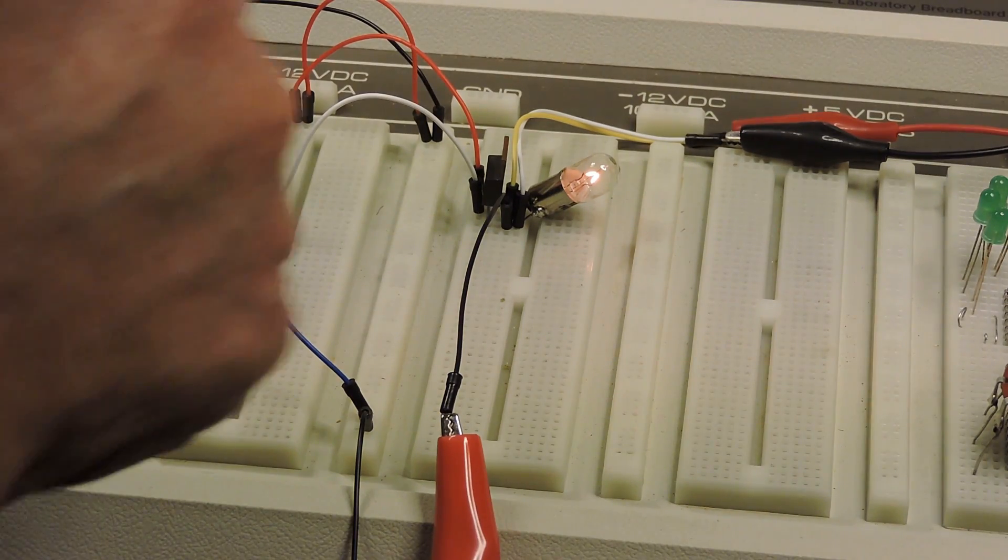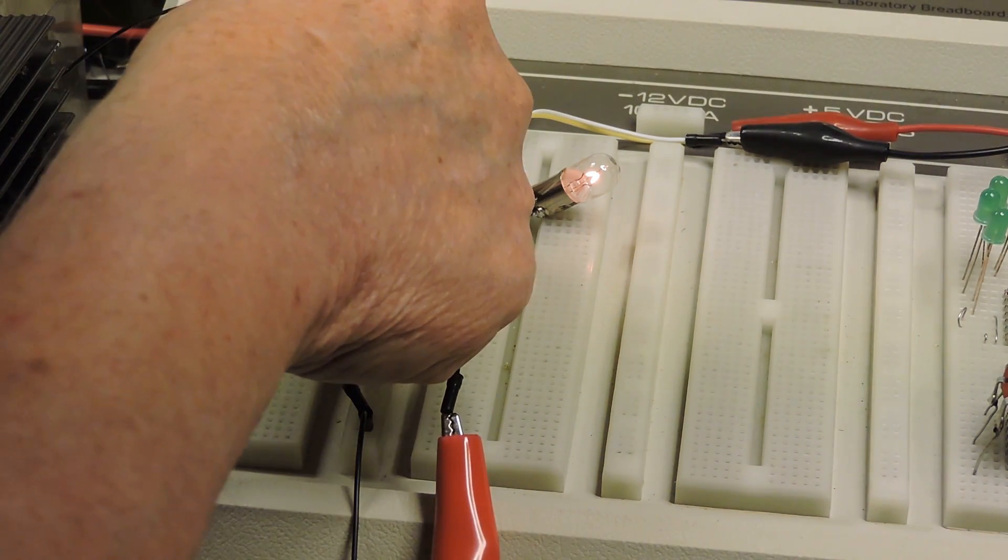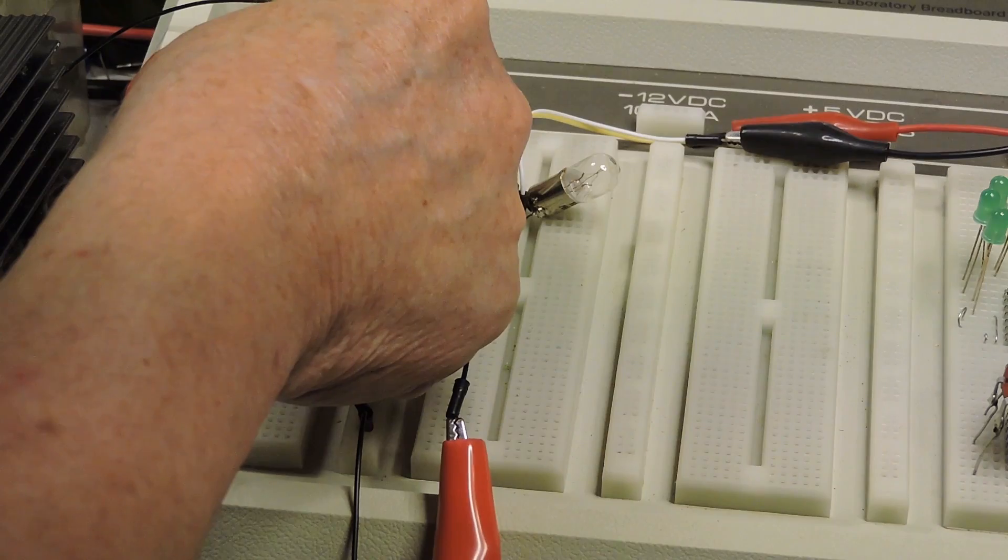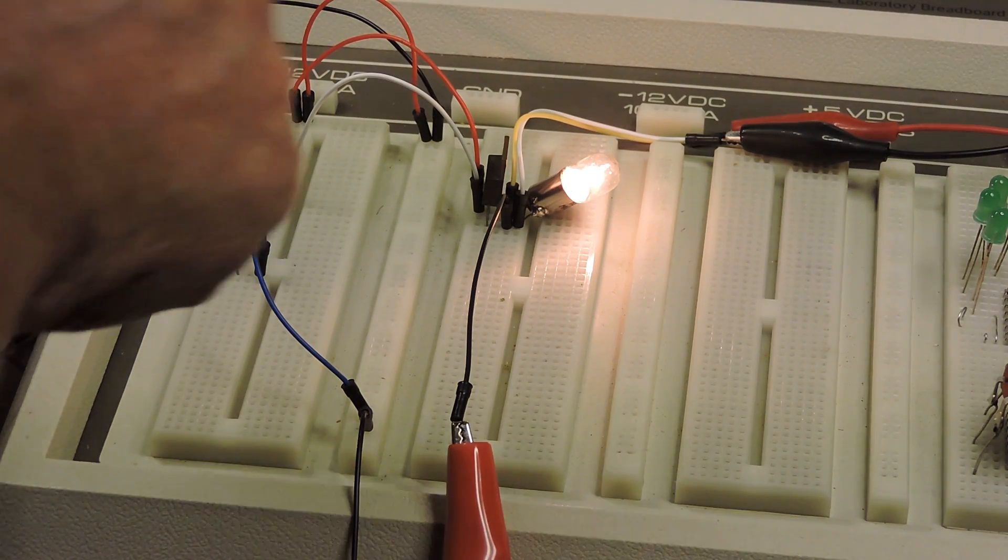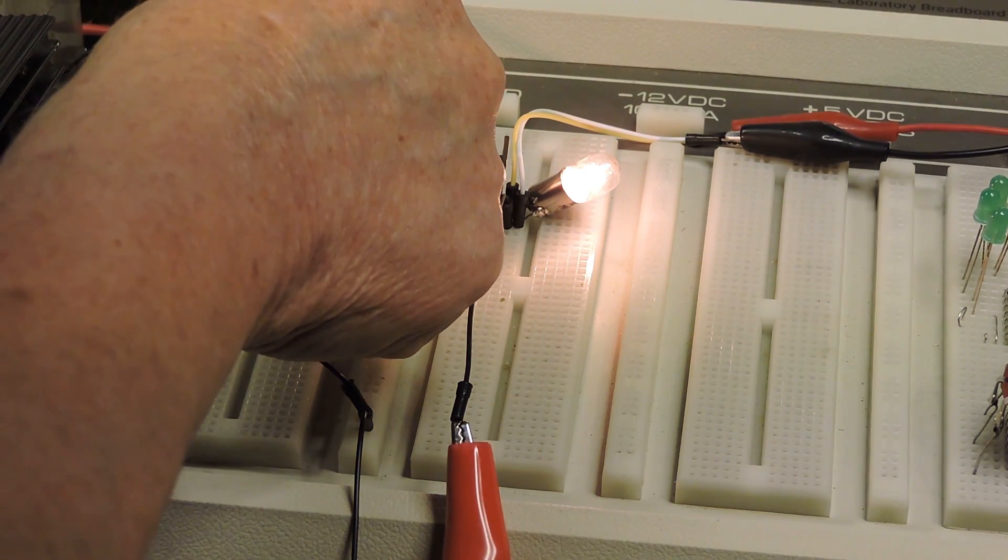So what we saw in this video was a transistor is a variable resistor and to change its resistance we change the bias at the base.